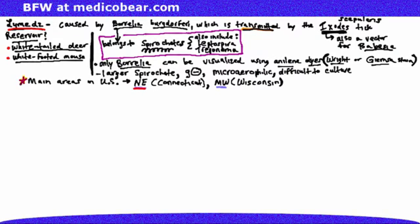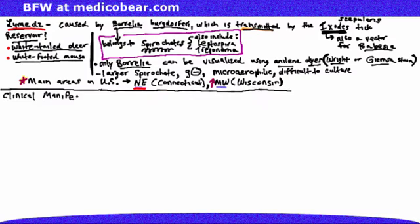The main areas where this disease is endemic to are the northeastern United States, for example, places like Connecticut. And it also can be found in the upper parts of the Midwest, for example, places like Wisconsin.